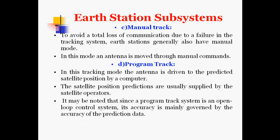The manual track system exists to avoid total loss of communication due to a failure in the tracking system. Earth stations generally also have a manual mode, where an antenna is moved through manual commands. In the program tracking mode, the antenna is driven to the predicted satellite position by a computer. The satellite position predictions are usually supplied by the satellite operators. Since program track is an open-loop control system, its accuracy is mainly governed by the accuracy of the prediction data.